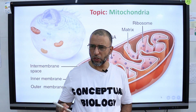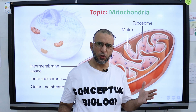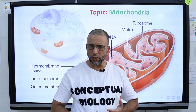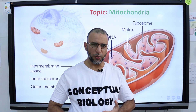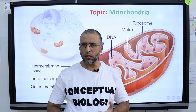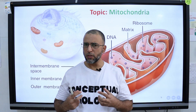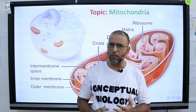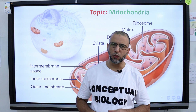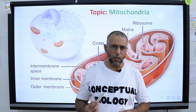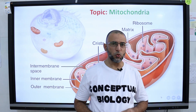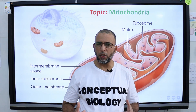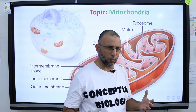Mitochondria is plural; mitochondrion is singular. Mitochondria are present in eukaryotic cells and involved in aerobic respiration. It is not surprising that cells with high demand for energy, such as liver and muscle cells, contain a large number of mitochondria. A liver cell may contain as many as 2000 mitochondria. If you exercise regularly, your muscles will make more mitochondria.